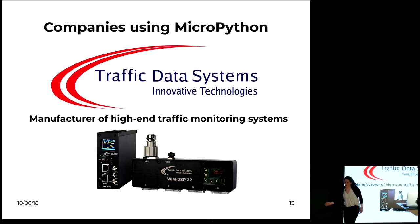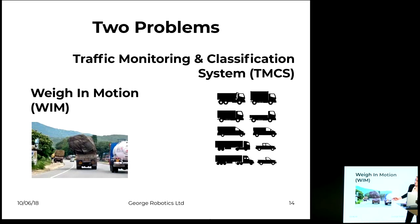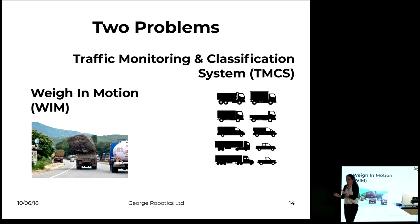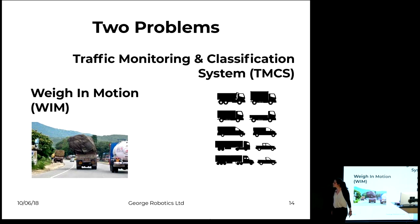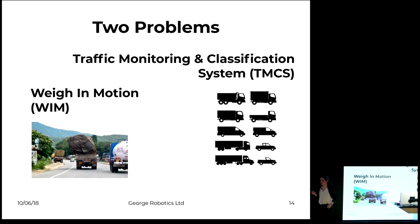On the left side you can see a traffic monitoring and classification system, because there are two problems: you have a lot of vehicles and they all need to be categorized. If you want to build new roads, you need reliable data on traffic volumes. And there's another problem — there are a lot of overloaded vehicles, which you don't always see as easily. So they have a system called weigh-in-motion.